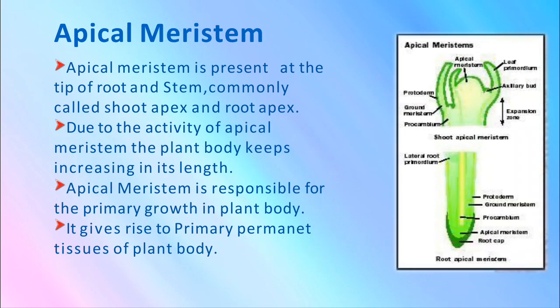Apical meristem is present at the tip of root and stem, commonly called shoot apex and root apex. Due to the activity of apical meristem, the plant body keeps increasing in its length. Apical meristem is responsible for primary growth in the plant body and gives rise to the primary permanent tissue of the plant body.